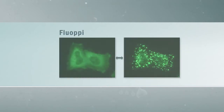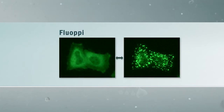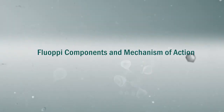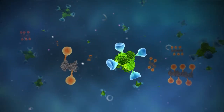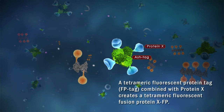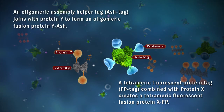FLOPI employs two tagged proteins to create fluorescent puncta when the two proteins interact. A tetrameric fluorescent protein tag, or FP tag, is fused to protein X to create a tetrameric fusion protein, XFP. An oligomeric ash tag joins with protein Y to form an oligomeric fusion protein, Y ash.